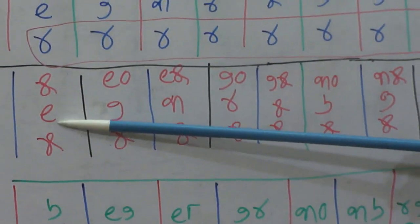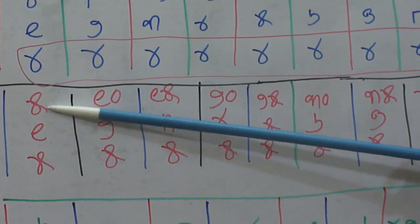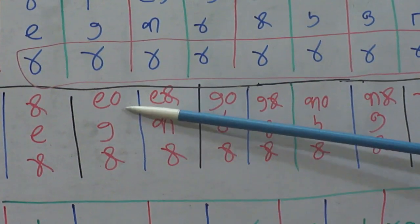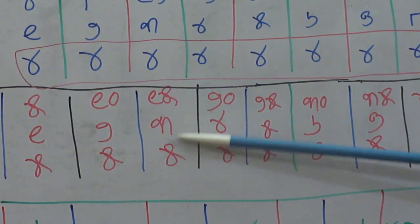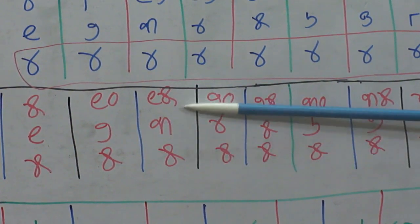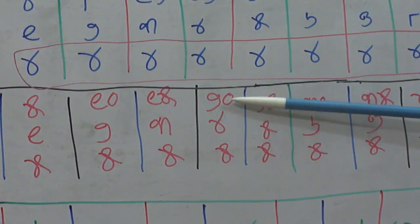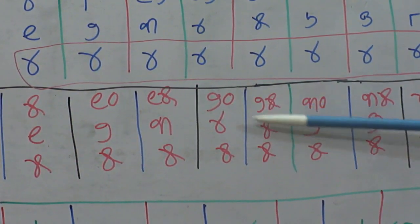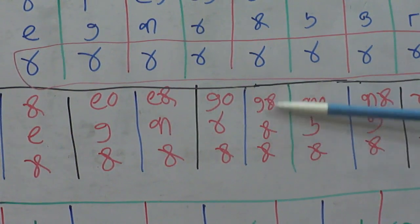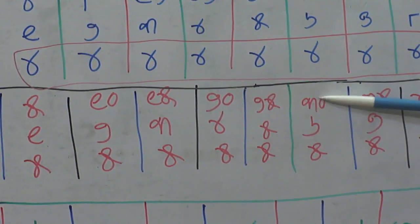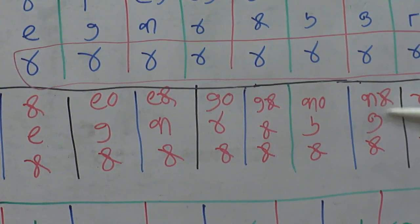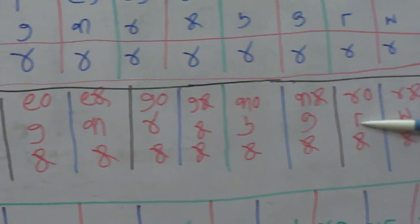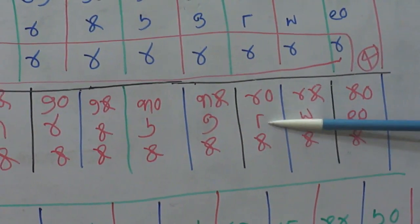Next one: five times one is five, five times two is ten, five times three is fifteen, five times four is twenty, five times five is twenty-five, five times six is thirty, five times seven is thirty-five, five times eight is forty.